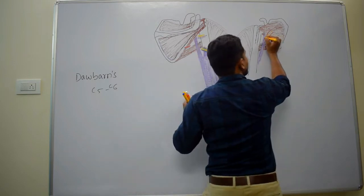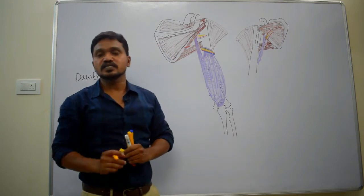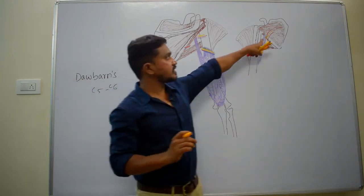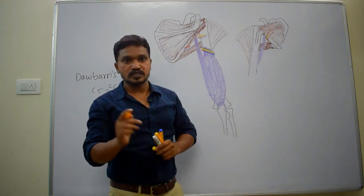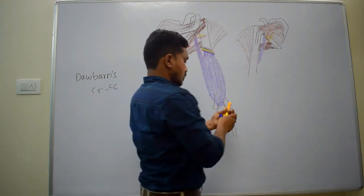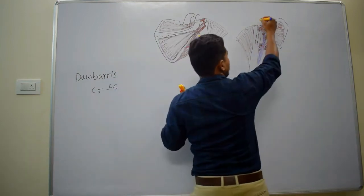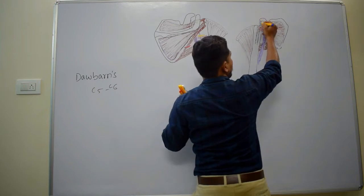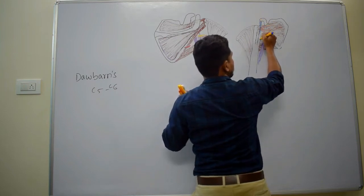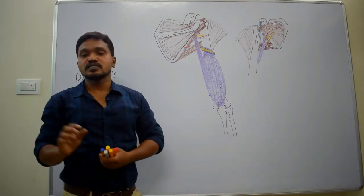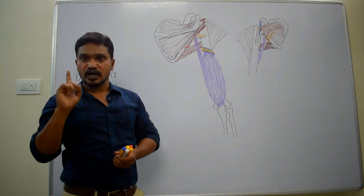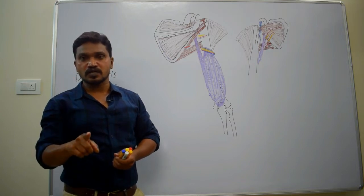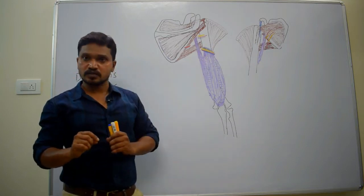In the axilla, the relations of the axillary nerve are: anteriorly the axillary artery, posteriorly the subscapularis muscle, and laterally the coracobrachialis muscle. These are the relations of the axillary nerve in the axilla.